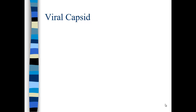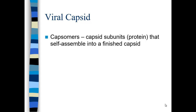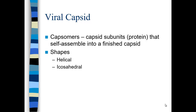Breaking this down, we start with the capsid. The capsid is formed of capsomers — individual protein subunits that self-assemble within the host cell to form a finished capsid around the nucleic acid core. There are two basic shapes for capsids. The first is helical, which looks like a long cylinder. The second is icosahedral, which is a 20-sided symmetrical structure made of capsomer triangles.